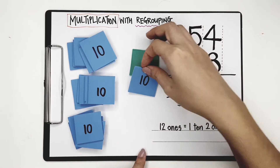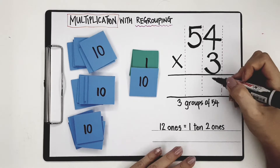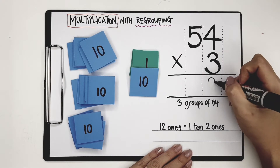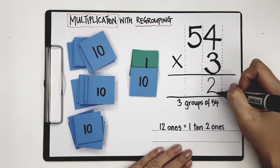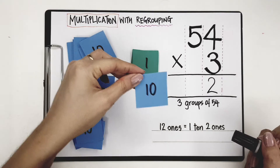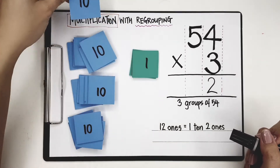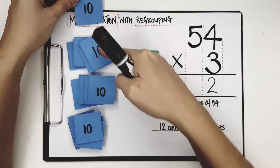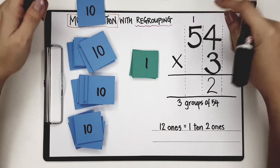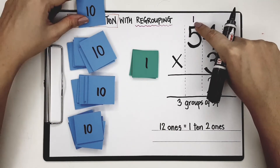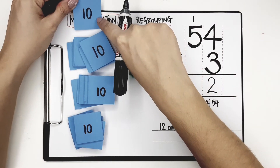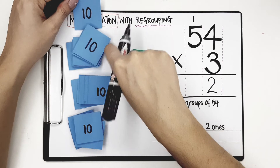Because I have 2 ones, I'm going to put 2 in the 1's place. Now where do I put this ten? I'm going to put it up there with the other tens. I put that 1 here, and this 1 shows me that there is 1 ten here that needs to be added later.